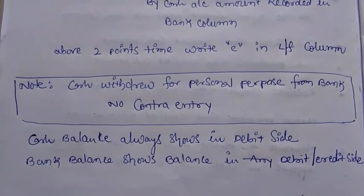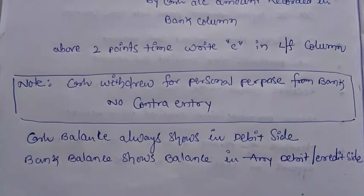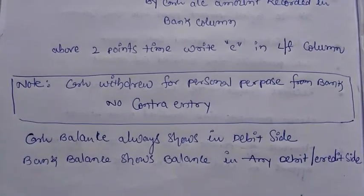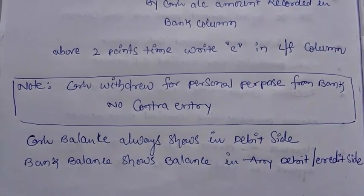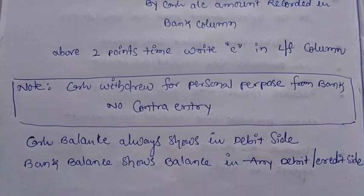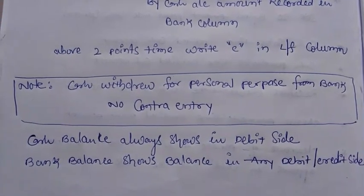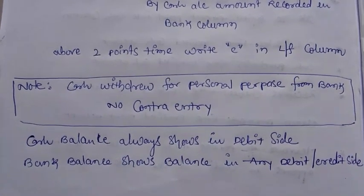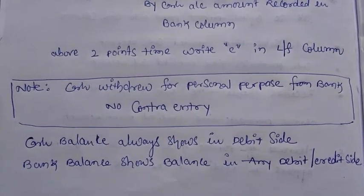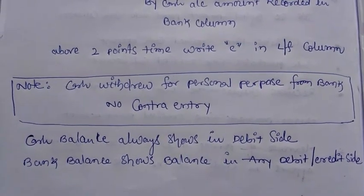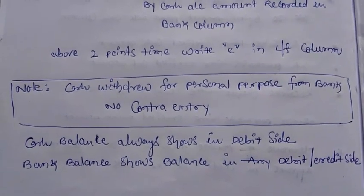Finally, when closing the Three Column Cash Book, cash balances always show on the debit side, but bank balances can show on either the debit or credit side. For the discount columns, the columns are only totaled (added), not balanced. Try to understand this Three Column Cash Book introduction and succeed in your examinations. All the best!